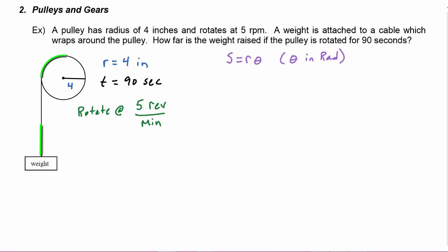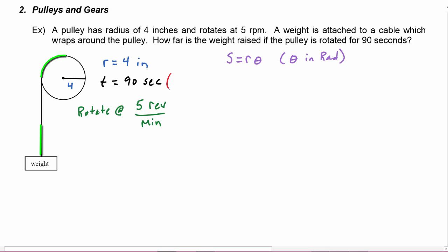So in order to use this equation we need the length of the radius, which we already have as four, and we need to get an angle in radian measure. The pulley is rotating at five revolutions per minute, and we want to figure out what angle the pulley will rotate through in that time. Because this rate is in minutes and our time is in seconds, we'll want to convert. We can convert seconds to minutes knowing that 60 seconds equals one minute, so seconds will cancel and our units will be minutes.